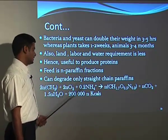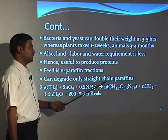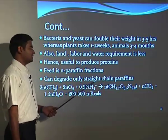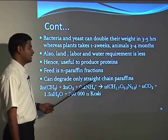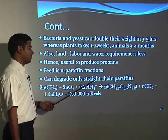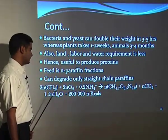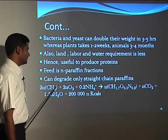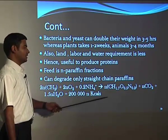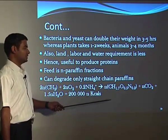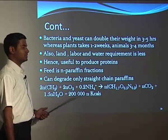If the substrate is the N-paraffin fraction, microorganisms can degrade only straight-chain paraffins. Branched-chain paraffins are very difficult to degrade as they are more stable, so only straight chains can be converted to the protein fraction. In the presence of oxygen and nutrients, N-paraffins yield proteins with evolution of CO₂ and energy.